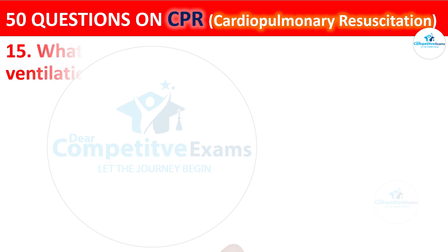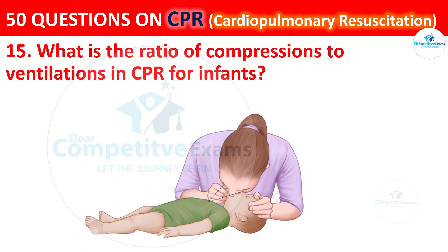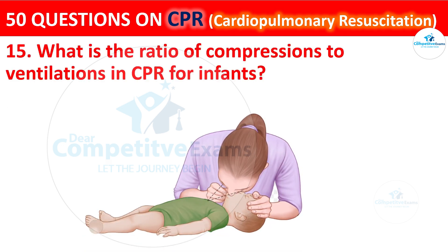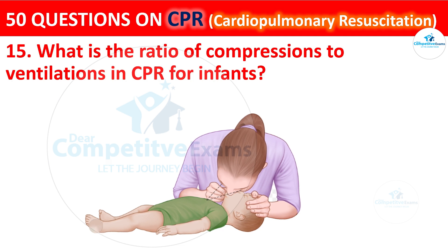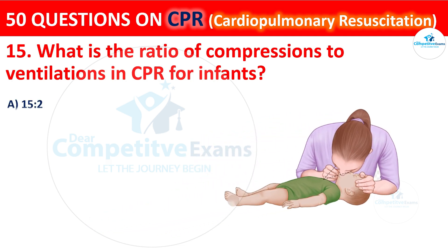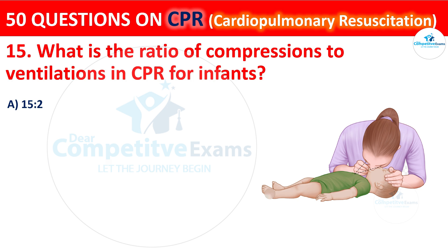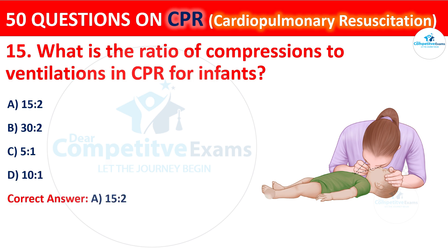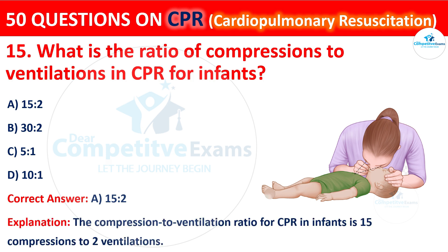Question 15: What is the ratio of compression to ventilation in CPR for infants? Your options are: 15:2, 30:2, 5:1, or 10:1. The correct answer is A: 15:2. The compression to ventilation ratio for CPR in infants is 15 compressions to 2 ventilations.